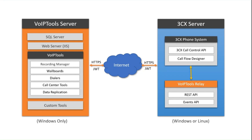We further require JWT authorization tokens, making it a very secure platform. Because we're communicating over HTTPS, it doesn't matter where 3CX exists and where the VoIP Tools server exists. The VoIP Tools server could be on-premises and the 3CX server in the cloud, or they could both be in the cloud, or vice versa. If you don't want to manage these VoIP Tools servers, we also offer hosting, and we have a support team available 24 hours a day, 7 days a week, 365 days a year via email and phone.